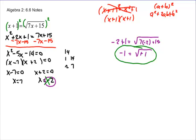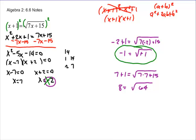Checking x = 7: 7 plus 1 equals the square root of 7 times 7 plus 15. That gives 8 equals the square root of 64, which is true. So when working these problems, you always have to check your answers.